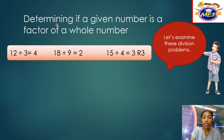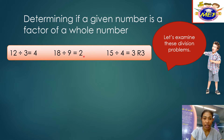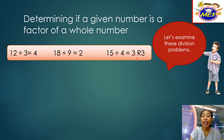For example, let's determine if a given number is a factor of a whole number by examining these division problems. The first one: 12 divided by 3 equals 4 — have you seen any remainder here? None, right. How about 18 divided by 9 equals 2 — any remainder? None. Then the next one: 15 divided by 4 equals 3 remainder 3. Is it a whole number or not?